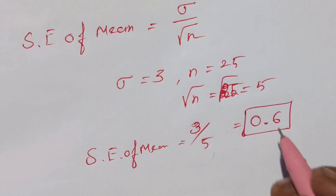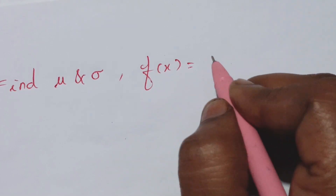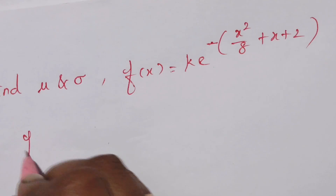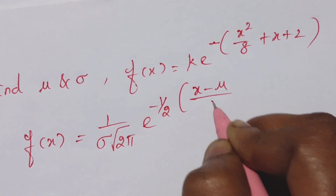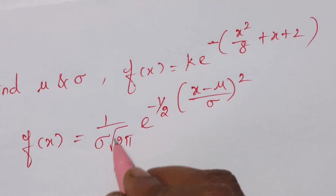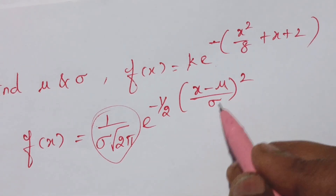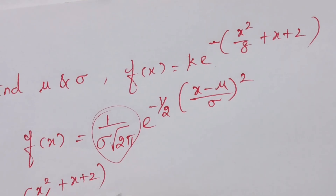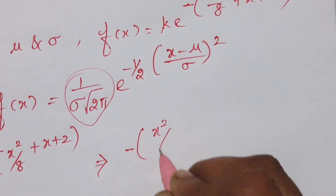Next question involves x plus 2. The normal distribution function is f(x) equals 1 over sigma times root of 2 pi, times e to the power of minus one-half times ((x minus mu) over sigma) squared. We identify the exponent term as e to the power of minus x squared over 8 plus x plus 2.